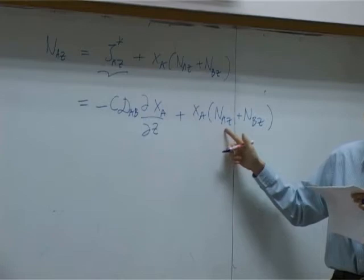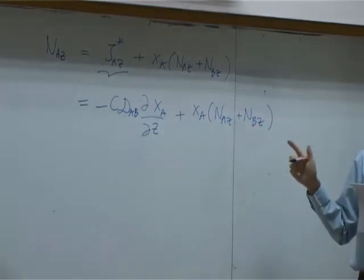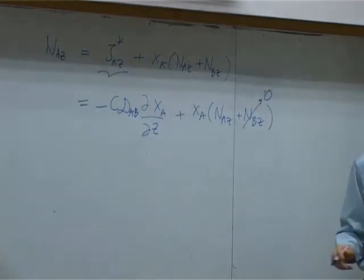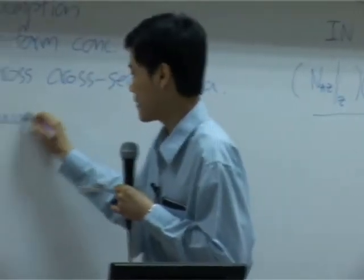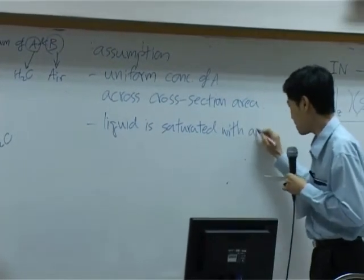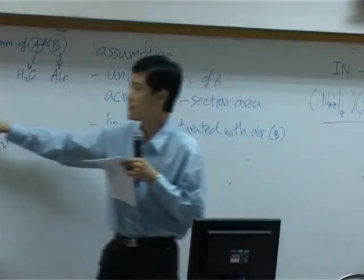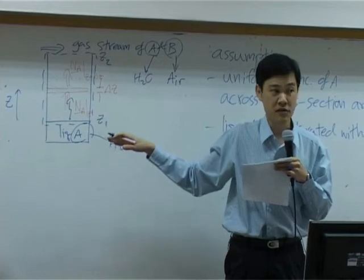So before we can move NAZ from the right-hand side to join the left-hand side, you need to somehow eliminate this NBZ. There's several ways. For this particular example, I'm going to say that NBZ is zero. How can I do that? It can be done based on this assumption. If I assume that liquid is already saturated with air or with B, it means that the liquid is air from vapor already dissolved in A to reach maximum concentration.